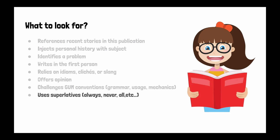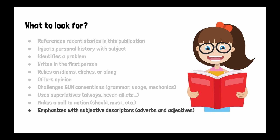Watch out for superlatives — always, never — or absolutes: it does this, it has this. Generally, reporting will try to skirt around absolutes, using phrases like it may have, or it could, or might imply. Also look for a call to action — here's something you should do — and you'll find a lot of emphasis where they're actually describing things with adverbs and adjectives.